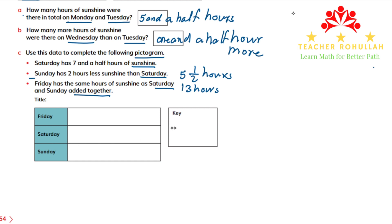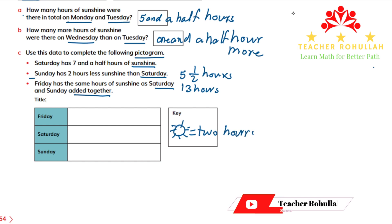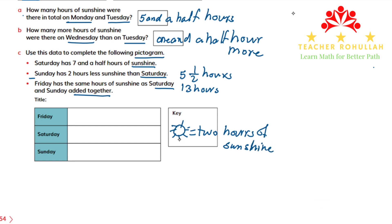For the key, I will draw the sun and show that each picture of the sun represents two hours of sunshine. That means one picture of the sun equals two hours. So on Friday we have 13 hours — how many pictures do we need? We need six and a half. I'll draw them: one, two, three, four, five, six, and another half of the sun — six and a half, which shows 13 hours of sunshine.